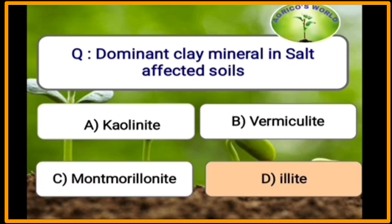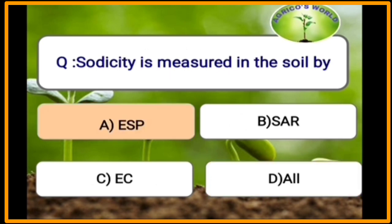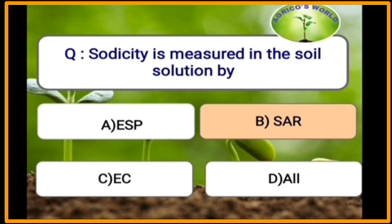The dominant clay mineral in salt-affected soils is illite. Sodicity is measured in the soil by exchangeable sodium percentage (ESP). Soil salinity is measured in the soil solution by sodium absorption ratio (SAR).